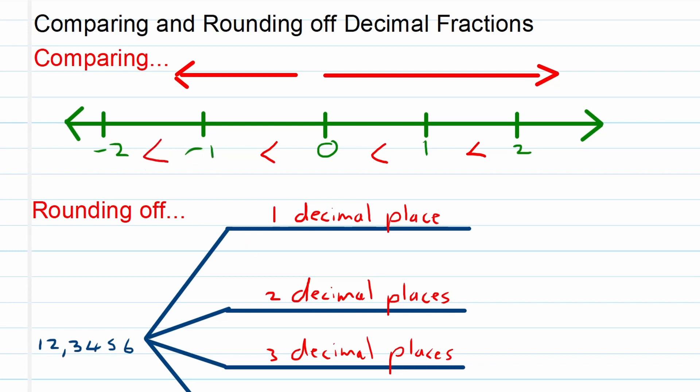Now already this pattern continues. Negative one is bigger than negative two. So remember, to the left is smaller and to the right is bigger from whichever value we are comparing. So that's all I want to say regarding comparing.